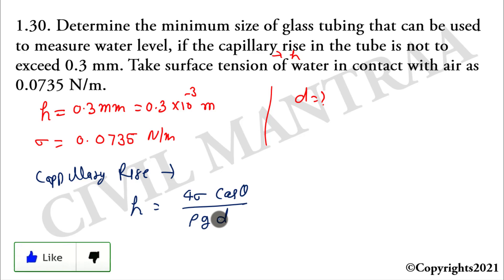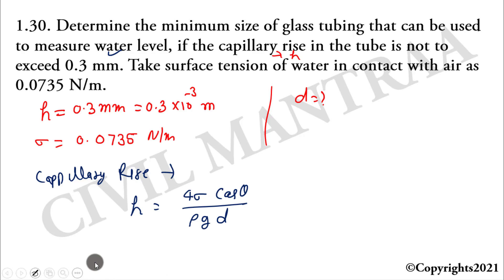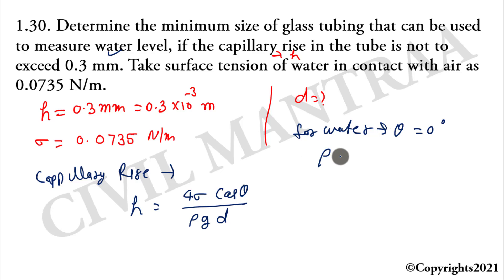Water के लिए देखें तो theta = 0 degree होता है, और rho यानी density of water = 1000 kg/m³ होती है। यह values हमें formula में रखनी हैं।